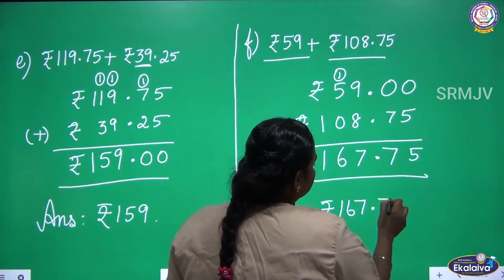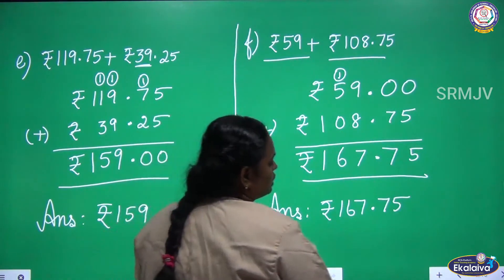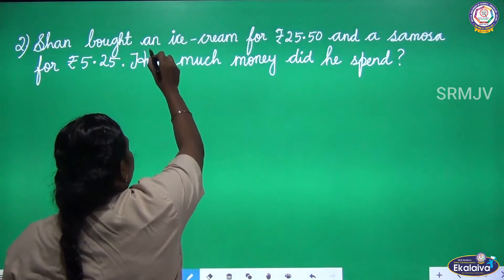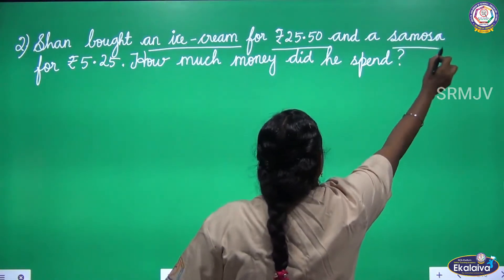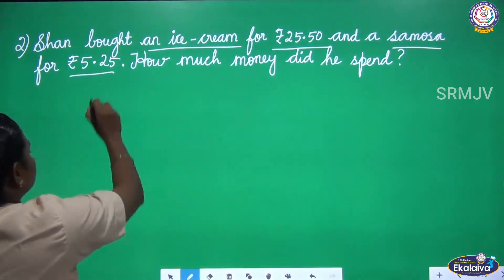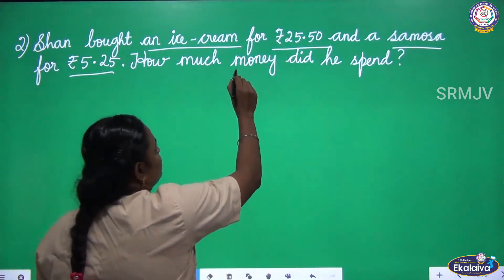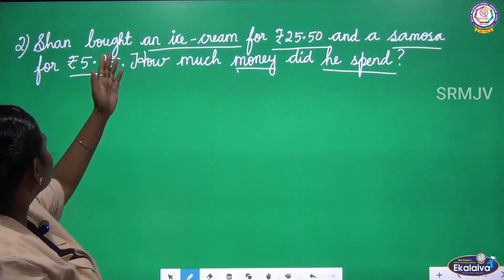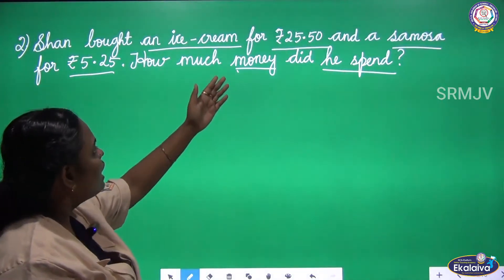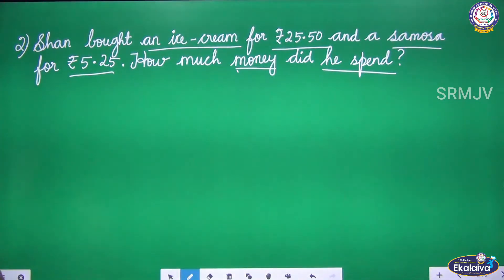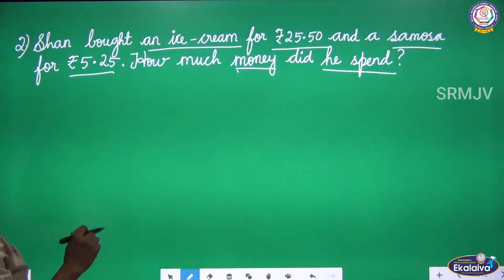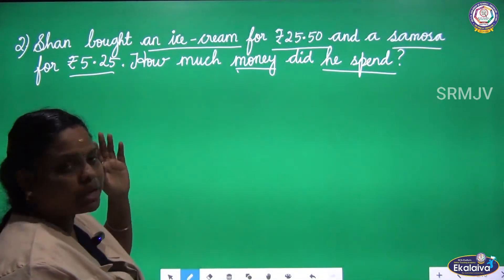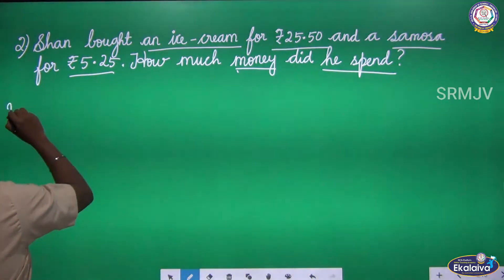Next one: Sean bought an ice cream for 25 Rupees and a samosa for 5 Rupees 25 Paise. How much money did he spend? So what he bought: ice cream for 25 Rupees and samosa for 5 Rupees 25 Paise. They are asking how much money he spent for both items. We are going to add and then find out the answer.